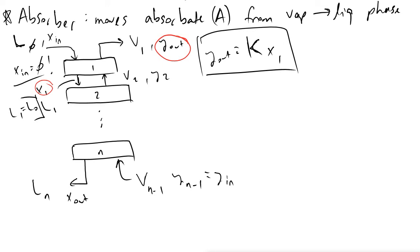And so the thing to note with absorbers is that because we're moving our absorbate from the vapor to the liquid phase, x_out will be more concentrated, with a higher molar ratio of your absorbate than x_in. And the opposite can be said of the vapor concentration. So Y_out will have a lower concentration than Y_in.